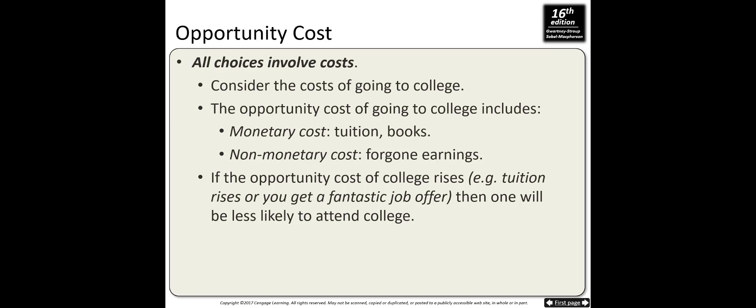Let's see an example from your life. Consider the cost of going to college. The first thing that comes to your mind are the monetary costs: tuition, books, and fees. These are opportunity costs because you could use that money to buy a car or a house. Therefore, it's a foregone opportunity — monetary costs are opportunity costs. What about non-monetary costs? When you go to college, you may not choose a full-time job.